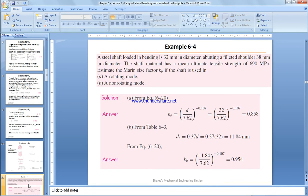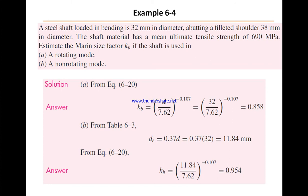We have a steel shaft loaded in bending, which is 32 millimeters in diameter, abutting a filleted shoulder 38 millimeters in diameter. The shaft material has a mean ultimate tensile strength of 690 megapascals. Estimate the Marin size factor kb if the shaft is used in a rotating mode or a non-rotating mode.